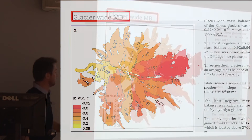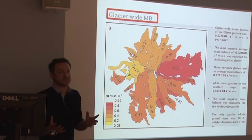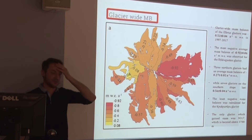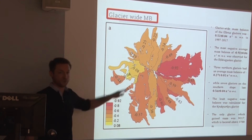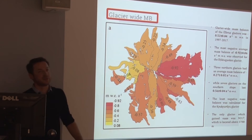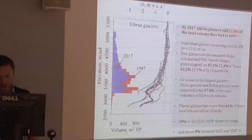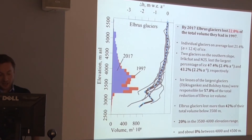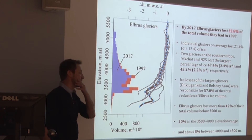The only glacier with a positive mass balance is not really a glacier as such — it's a body located above 4,500 meters, which is just the accumulation zone, and the only way for it to lose mass is through ice falls to the west. If we draw it like that — this is the most important picture, for me.